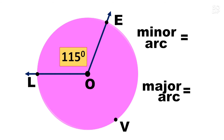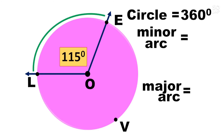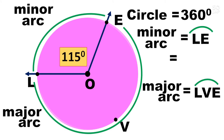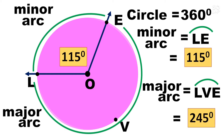Let's compare the minor arc and major arc. Recall that the circle measures 360 degrees. The minor arc is named with two letters — for example, arc LE — while the major arc is named with three letters — for example, arc LVE. If the minor arc measures 115 degrees, then the major arc measures 245 degrees, because 360 minus 115 equals 245 degrees.